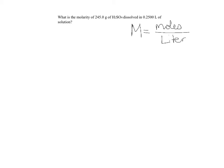What information are we given in the problem? We are given grams of a substance, grams of H2SO4, and we are given a volume of 0.2500 liters.